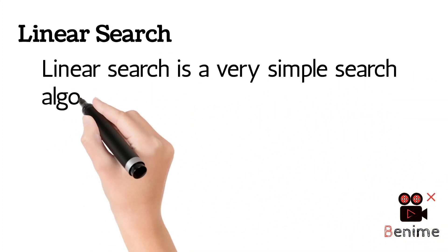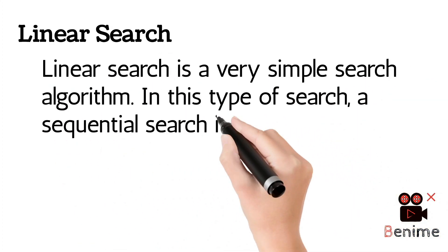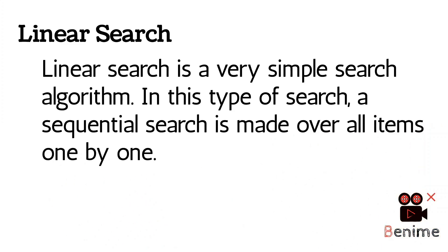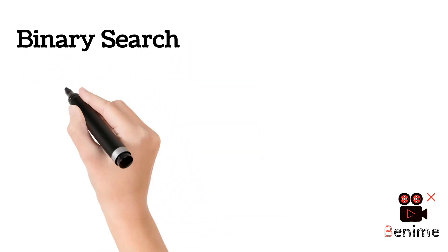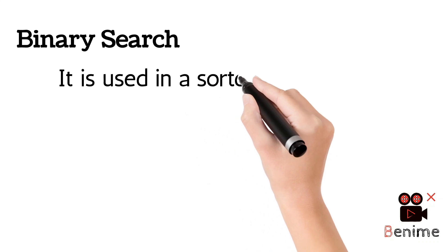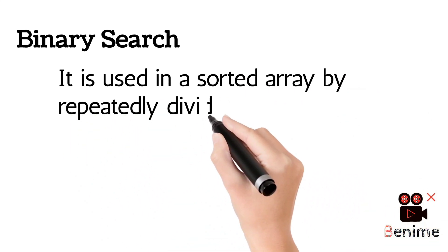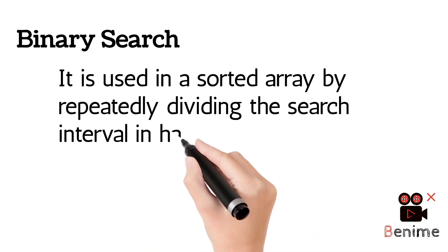Linear search is a very simple search algorithm. In this type of search, a sequential search is made over all items one by one. Binary search is used in sorted arrays by repeatedly dividing the search interval in half.